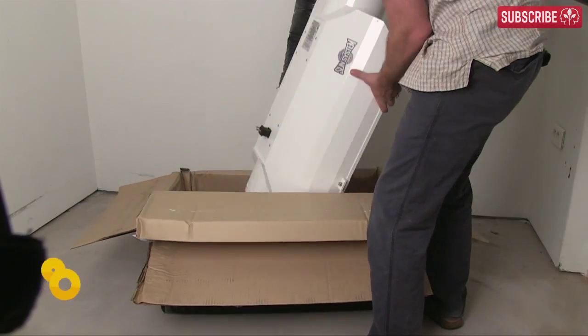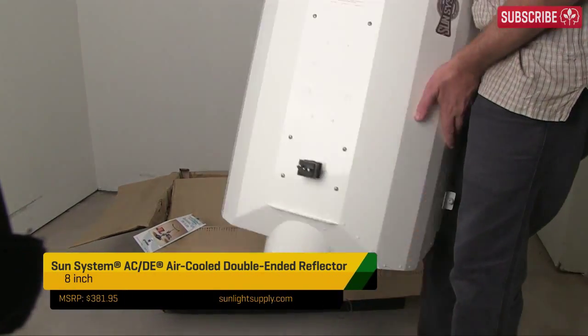Hey Growers! Today I'm testing the Sun System AC DE Reflector. AC stands for Air Cool, DE stands for double-ended.